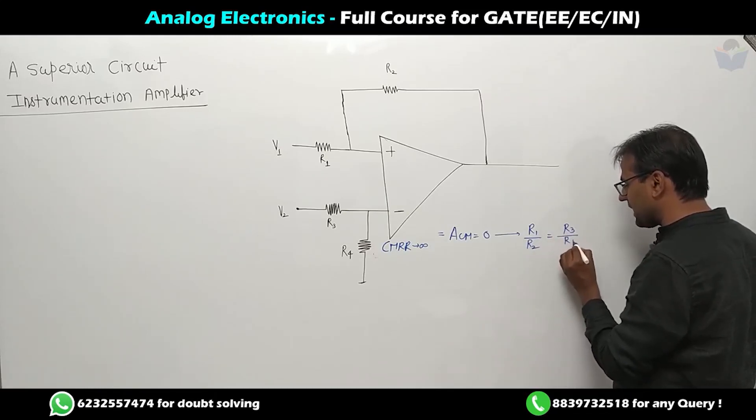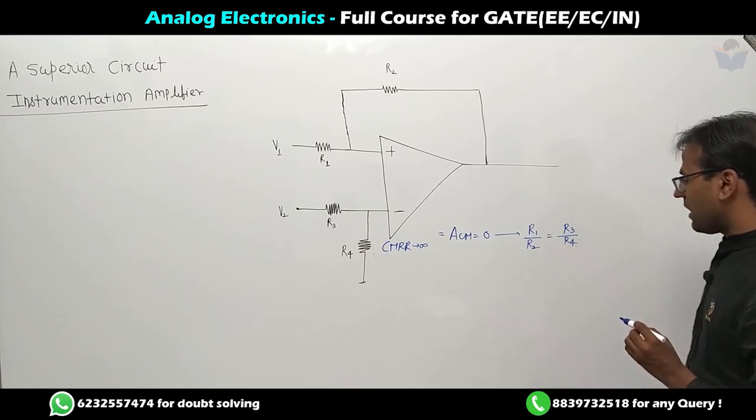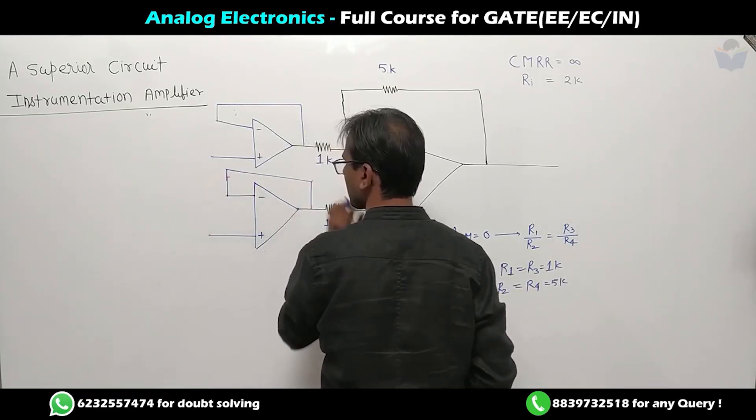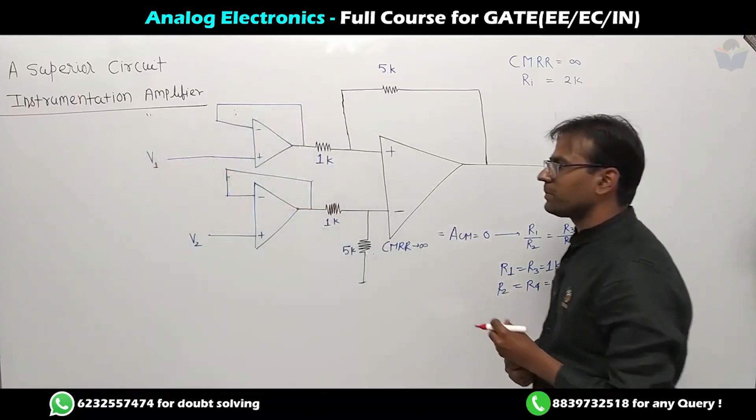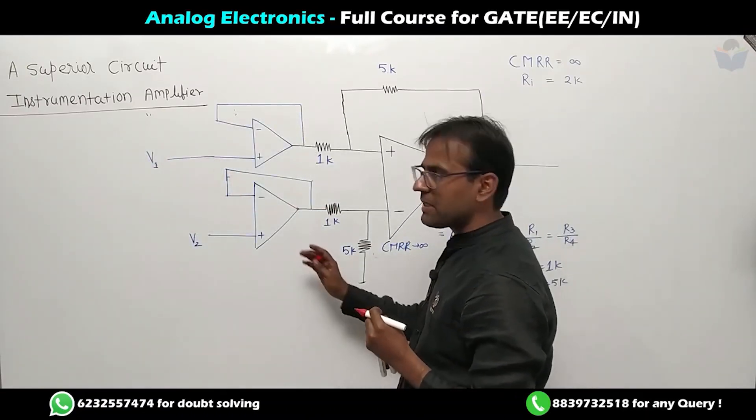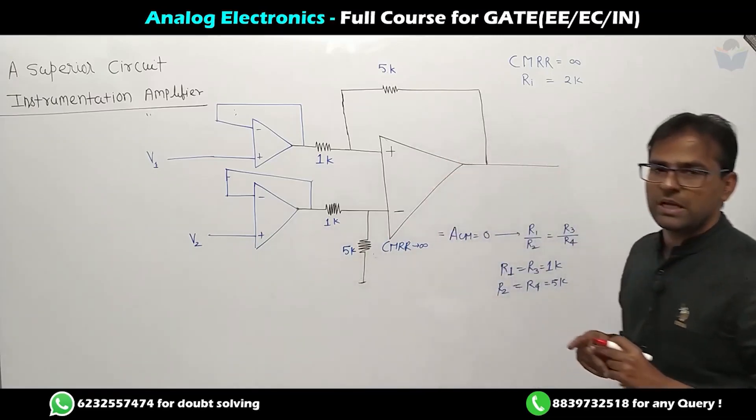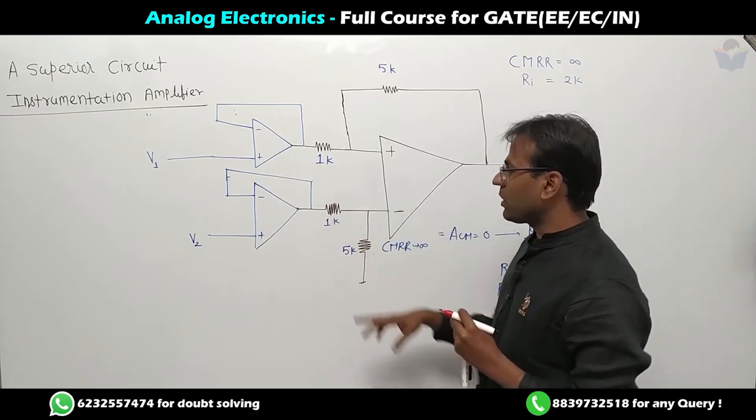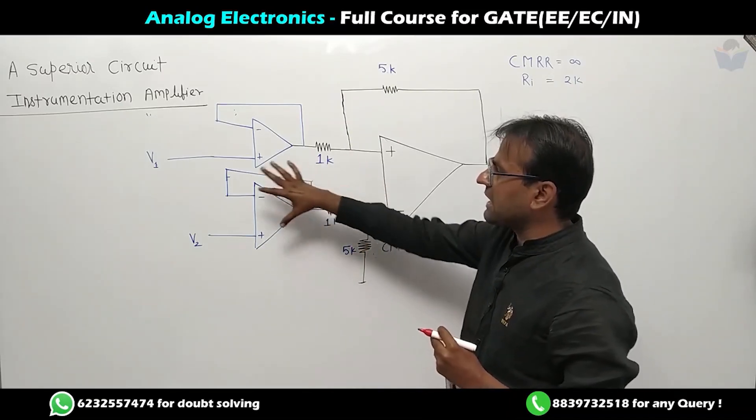Now the problem - the ideal voltage amplifier expectation was that its input resistance should be very high, but it was only 2 kilohm. This 2 kilohm resistance needed to be converted to high resistance.